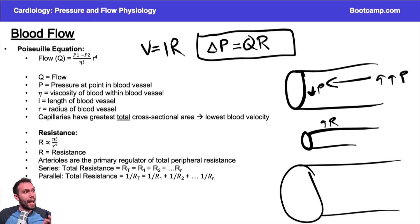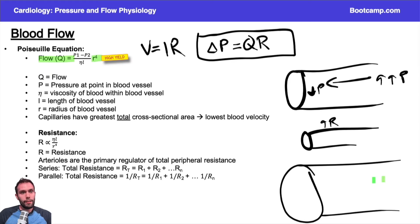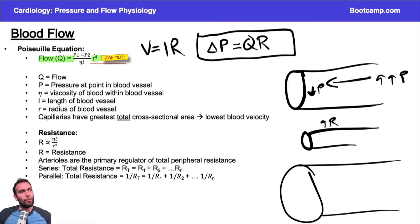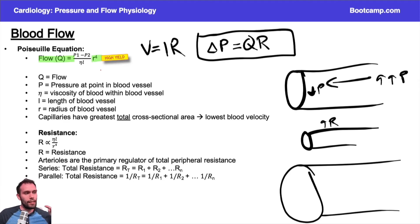The first and highest-yield point is that radius is the primary determinant of flow and resistance. Radius is proportional to flow: higher radius means more flow; lower radius means less flow. It's raised to the fourth power, so if I double the radius of my blood vessel, I get 16 times the amount of flow — that's a pretty big change, because two to the fourth power is 16.